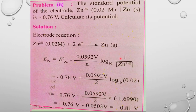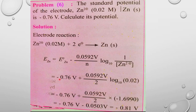The product is zinc metal (activity = 1) and the reactant is Zn²⁺ at 0.02 M. Substituting: E = −0.76 V − (0.0592 / 2) × log(1 / 0.02). Here n = 2 for the two electrons transferred.